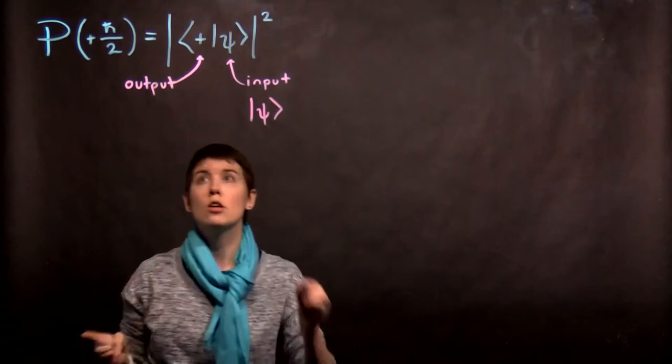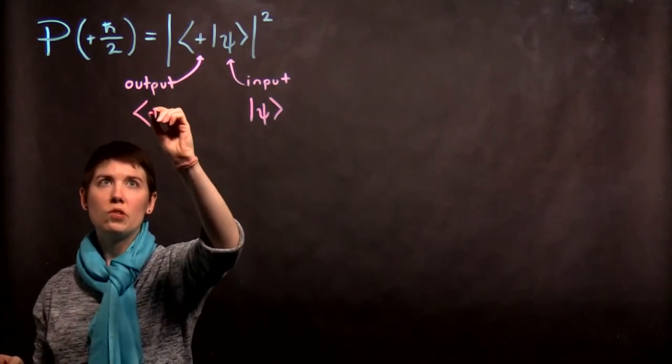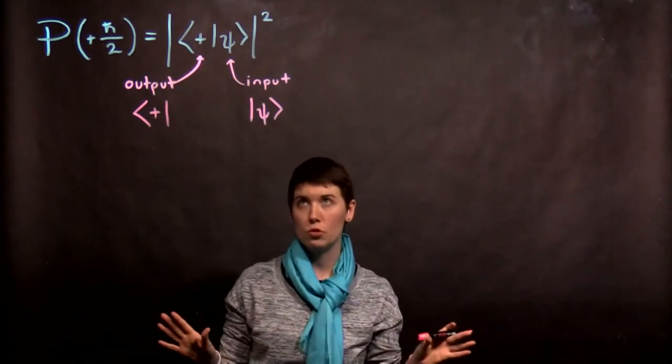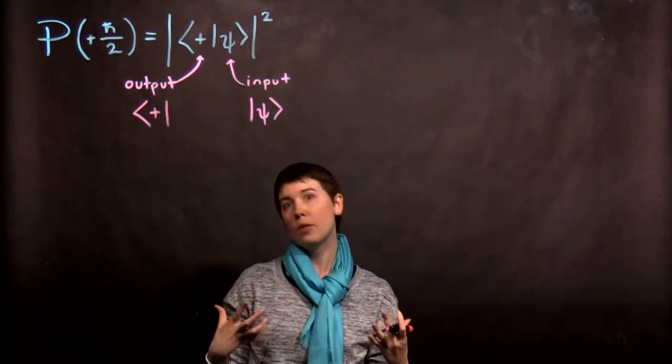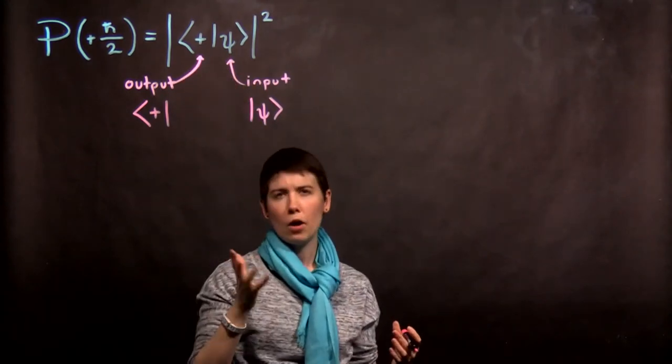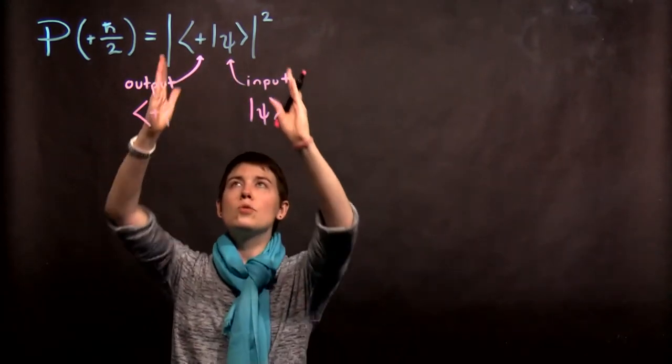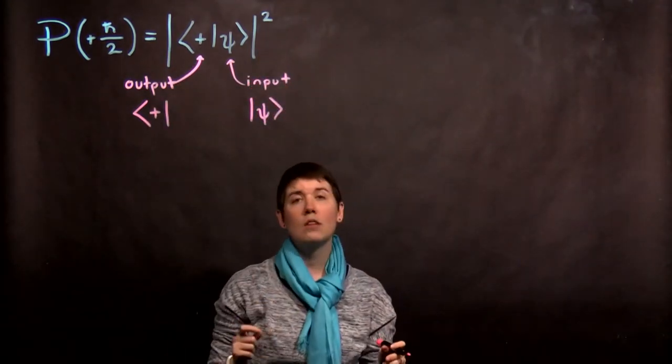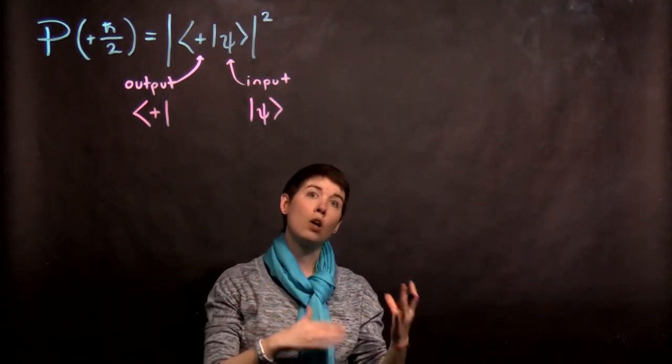Notice that this is our bra vector. So this is now in our bra vector space. So ket space, bra space. Two different vector spaces. So to calculate probability, we smoosh them together, we'll talk about how you actually do that, and then you take the magnitude squared.